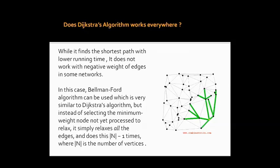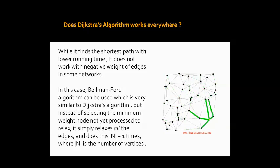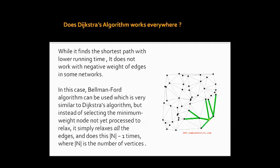Dijkstra's Algorithm works well and finds the shortest path with lower running time. However, it does not work with negative weight edges in some networks. In that case, the Bellman-Ford algorithm can be used, which is very similar to Dijkstra's Algorithm, but instead of selecting the minimum weight unprocessed node to relax, it simply relaxes all edges N minus 1 times, where N is the number of vertices.